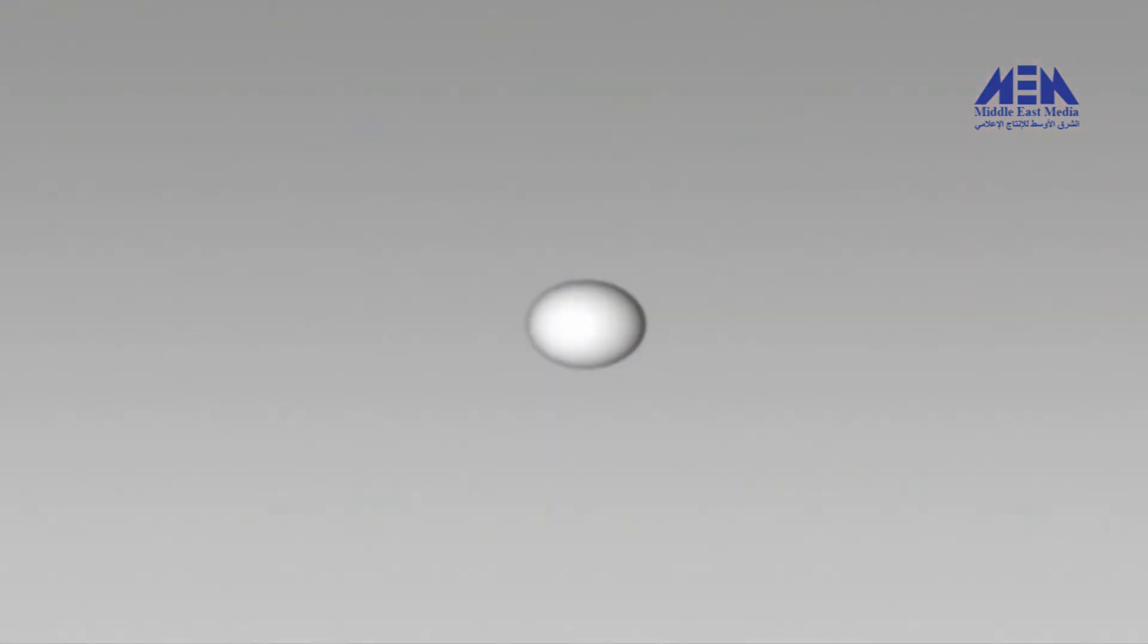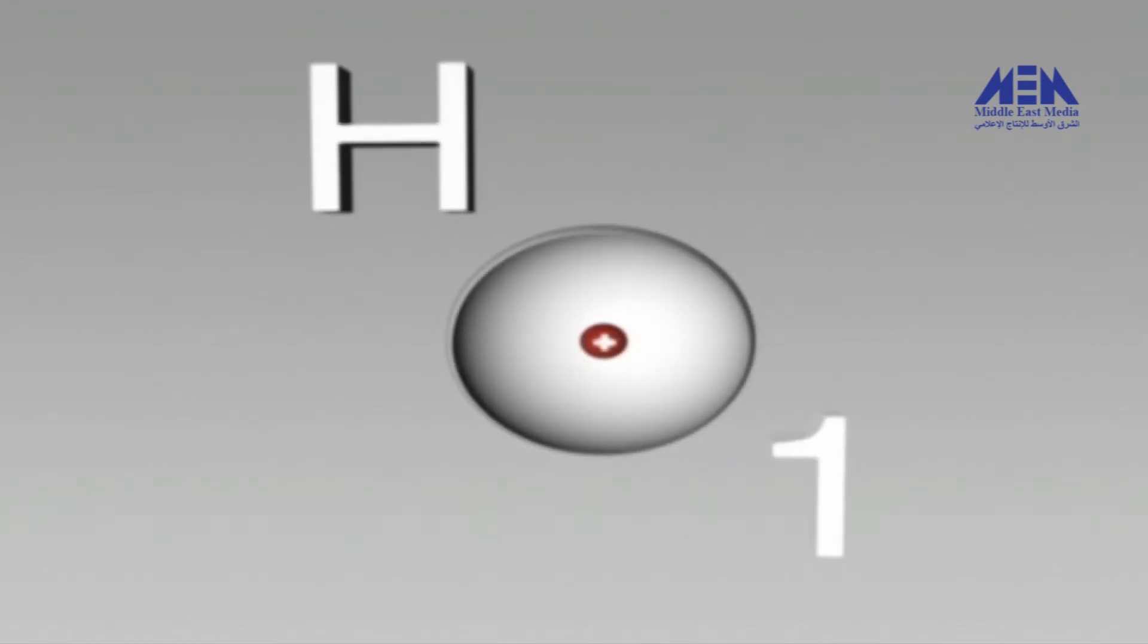How do the different subatomic particles of the atom measure up? Let's look at the simplest atom, hydrogen, with a nucleus consisting of a single proton, orbited by a single electron.